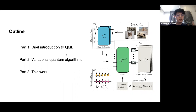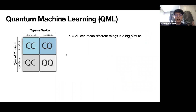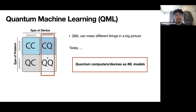Quantum machine learning is a really broad term that people have been using. Roughly speaking, you can divide it into three categories depending on the types of devices you use to solve a problem and the type of data you have. For example, you can have a classical problem and solve it with quantum computers. In this talk, we're going to focus specifically on using quantum computers or devices as a machine learning model.